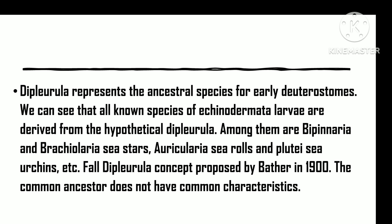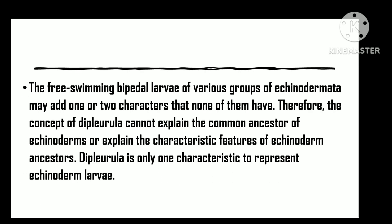The common ancestor did not possess all the common characteristics of the free-swimming bilateral larvae of the different groups of echinoderms, and it might have had one or two characters which none of them possess. Hence, the De Dipleurula concept cannot illustrate the common ancestor of the echinoderms or fully explain the characteristic features of the ancestor. This concept is merely a name for features common to present echinoderm larvae.